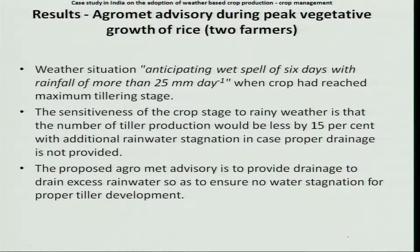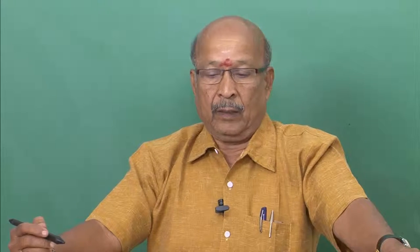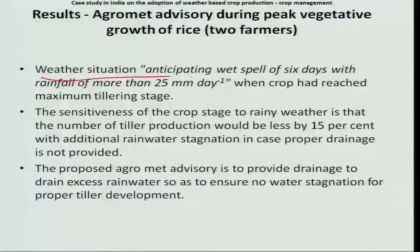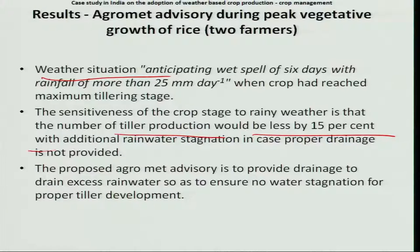The next example will give you strong confidence in the agro-advisory prepared based on weather forecast. Here, the anticipated weather situation is a wet spell of 6 days with rainfall of more than 25 millimetres per day — around 150 millimetres in 6 days. The rice is in the tillering stage. Tillering means the rice is putting on more biomass, and when water is excessive, tiller production is affected. It has been estimated that 15% of the tillers will be affected.